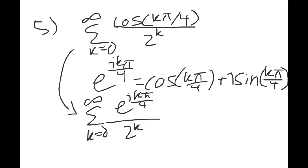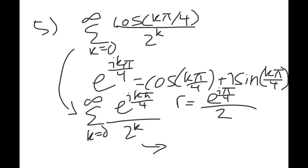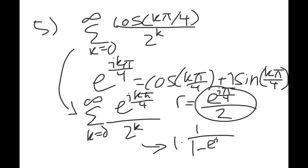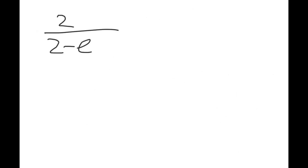Applying the geometric series formula with first term 1 and ratio e^(iπ/4)/2, we get 1 / (1 − e^(iπ/4)/2) = 2 / (2 − e^(iπ/4)). Since cos(π/4) = sin(π/4) = √2/2, we have e^(iπ/4) = √2/2 + i√2/2. So the denominator becomes (2 − √2/2) − i√2/2.